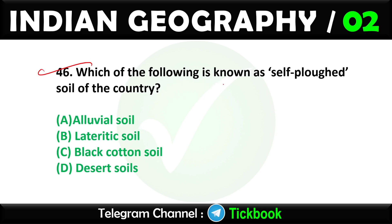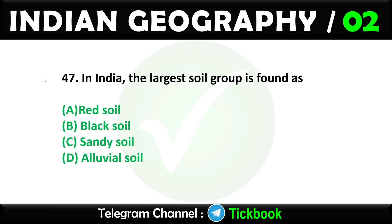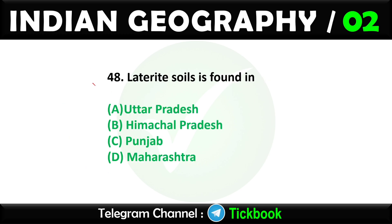Question forty-six: Which of the following is known as the self-ploughing soil of the country? Option number C: Black cotton soil. Question forty-seven: In India, the largest soil group is found as. Option number D: Alluvial soil. Question forty-eight: Laterite soil is found in. Option number D: Maharashtra.